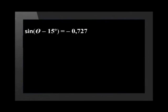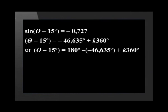Remember, there are two different formulae to use. The first one reads theta minus 15 degrees equals minus 46.635 degrees plus k times 360 degrees. The second one reads theta minus 15 equals 180 degrees minus, in brackets, negative 46.635 degrees plus k times 360 degrees.